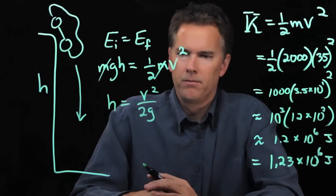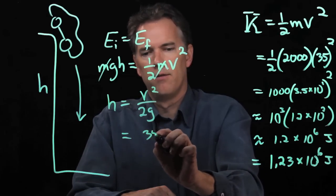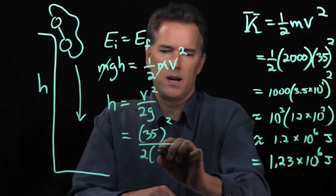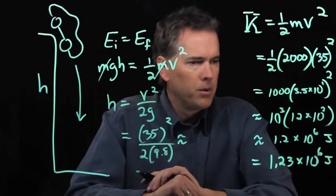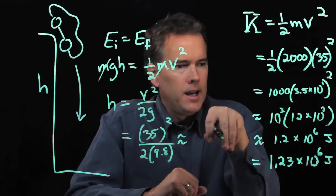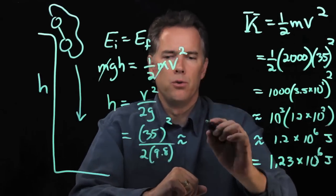And now I have all those numbers. V was 35 squared, 2 times 9.8. Let's approximate that here. We know what 35 squared is now. It is 1.23 times 10 to the 2.